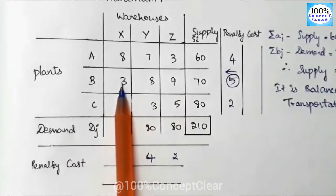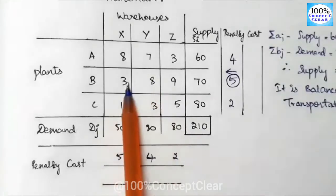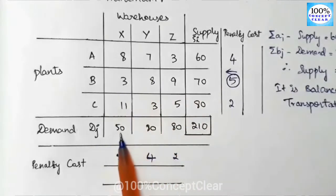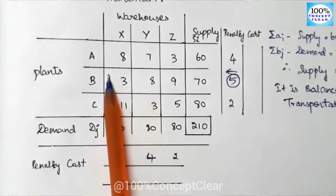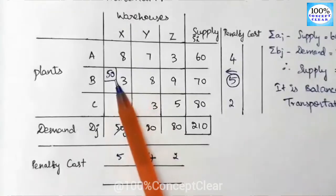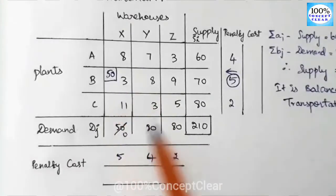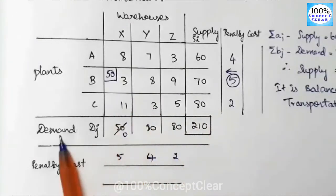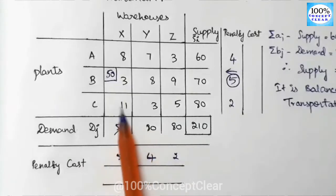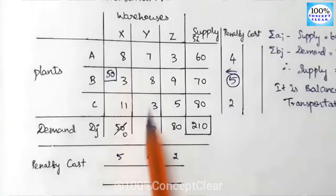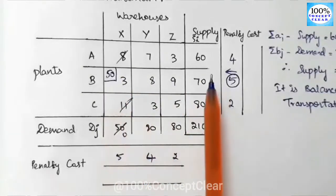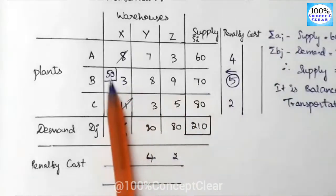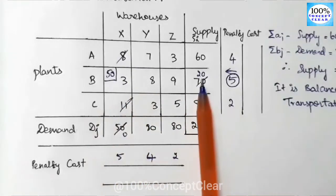We allocate at the least cost cell. Comparing demand and supply: supply and demand at this position is 50, so we allocate 50 and cancel this demand of 50. Since demand becomes 0, we cancel the first column. Then 70 minus 50 equals 20 remaining supply. The first allocation is complete.